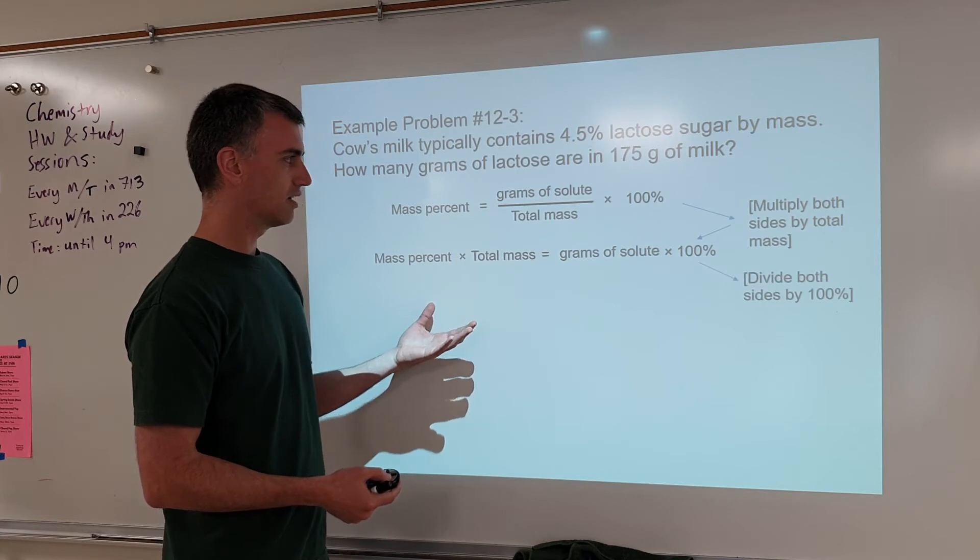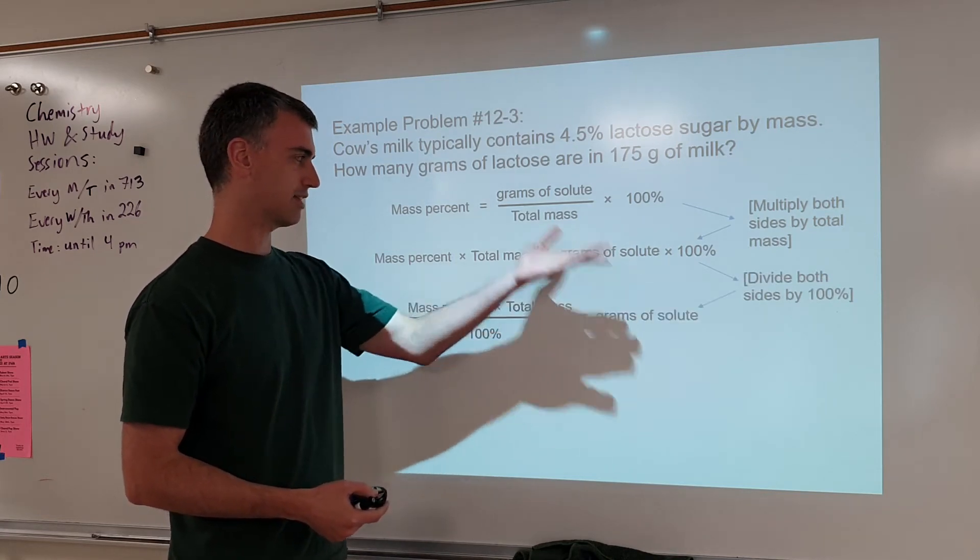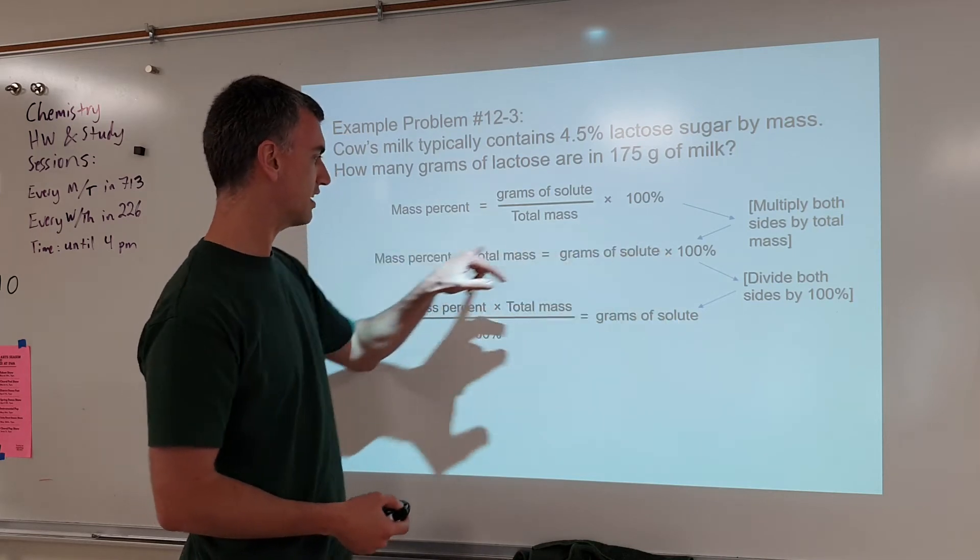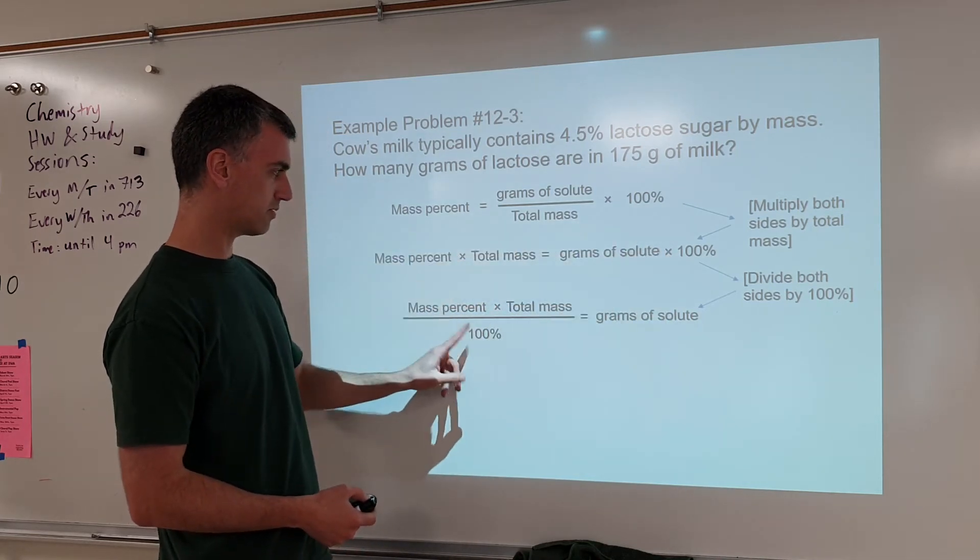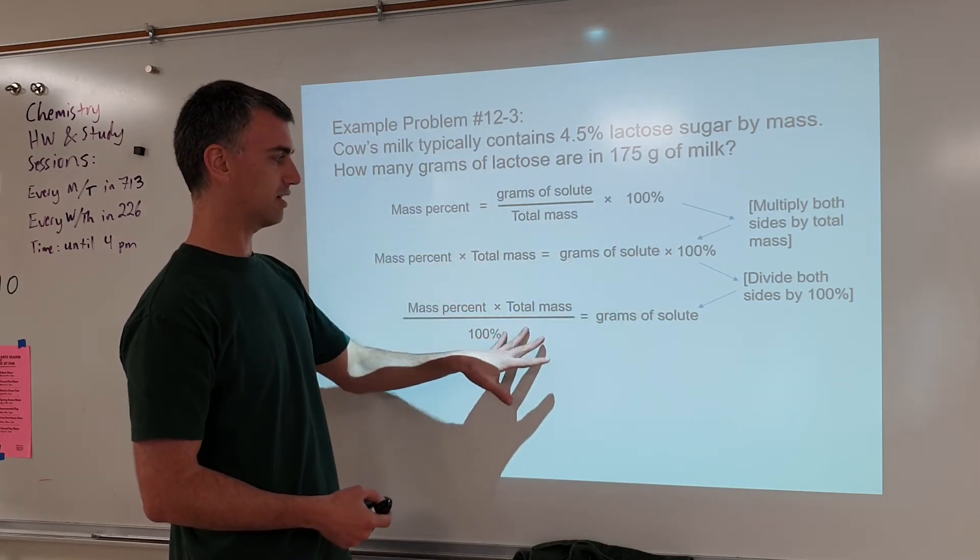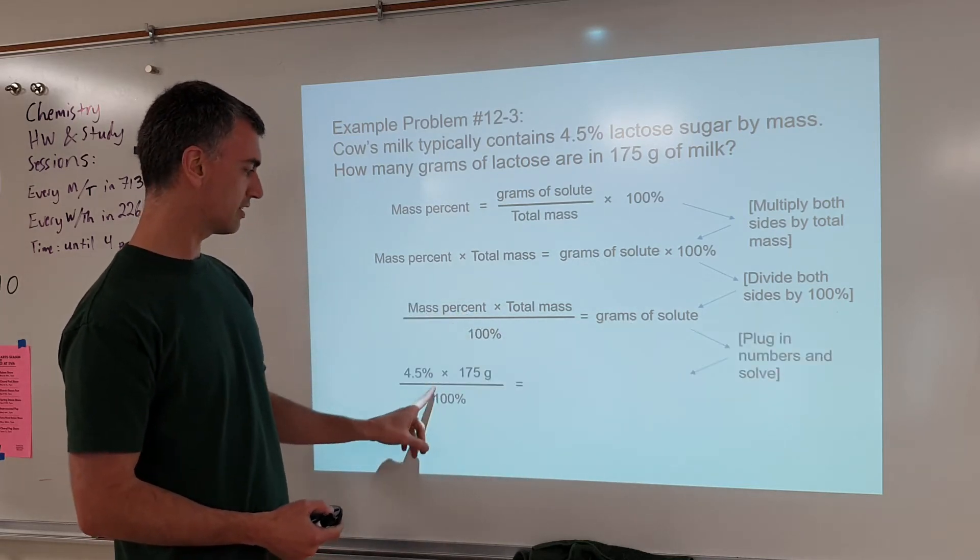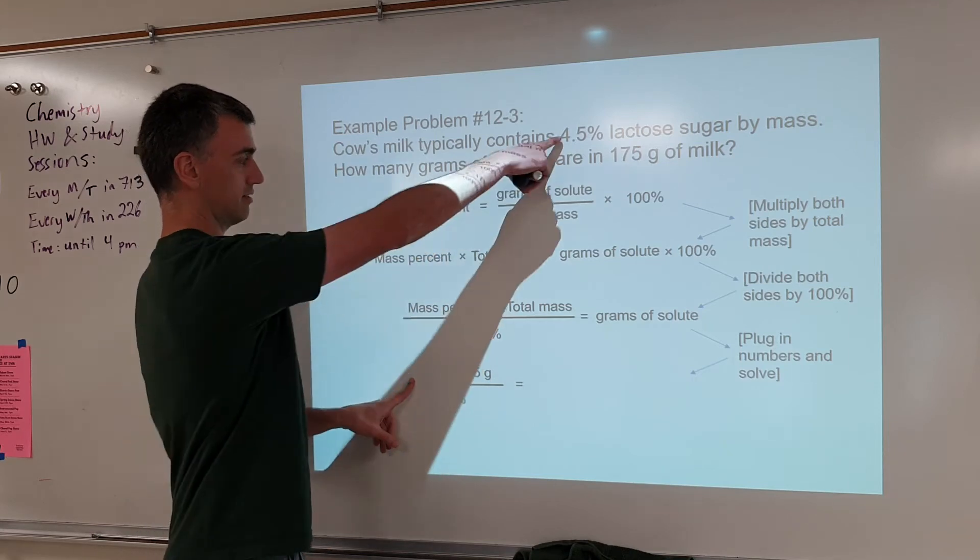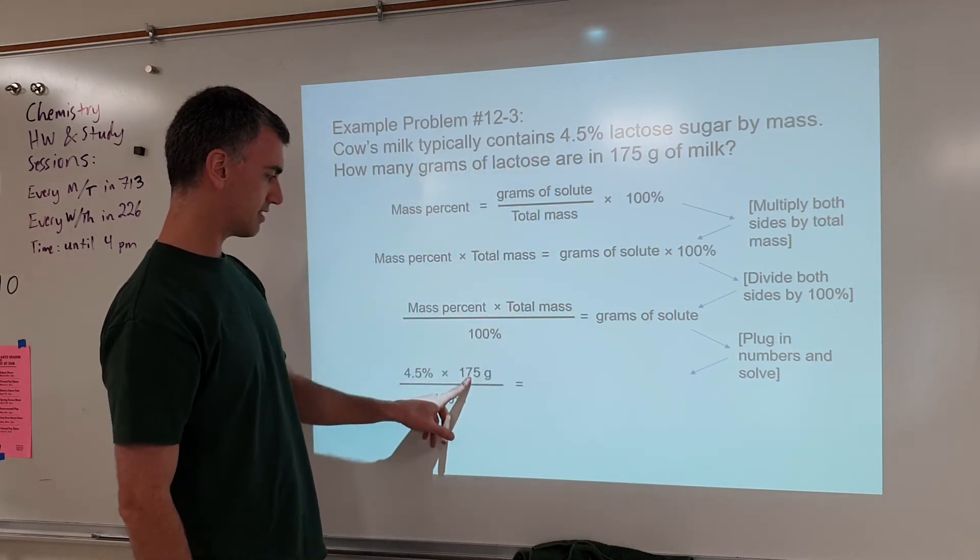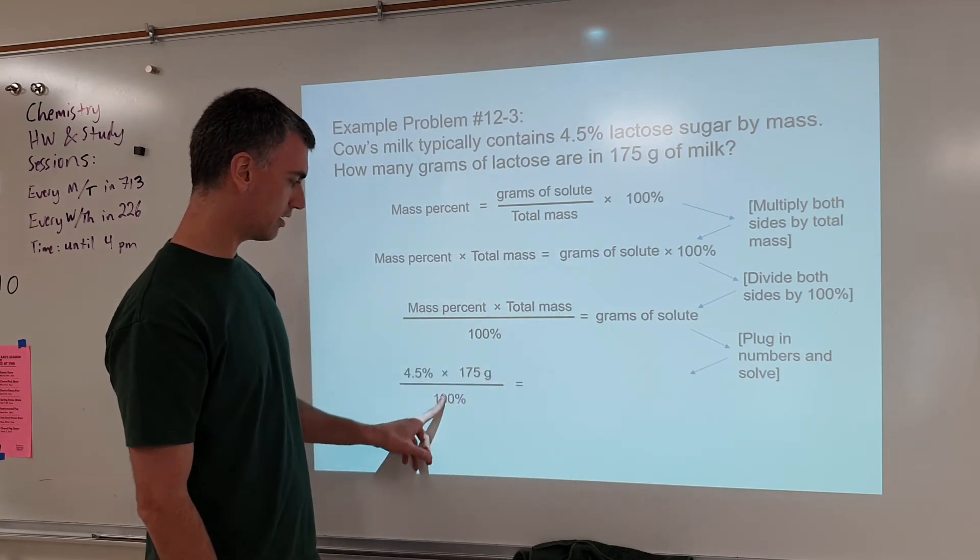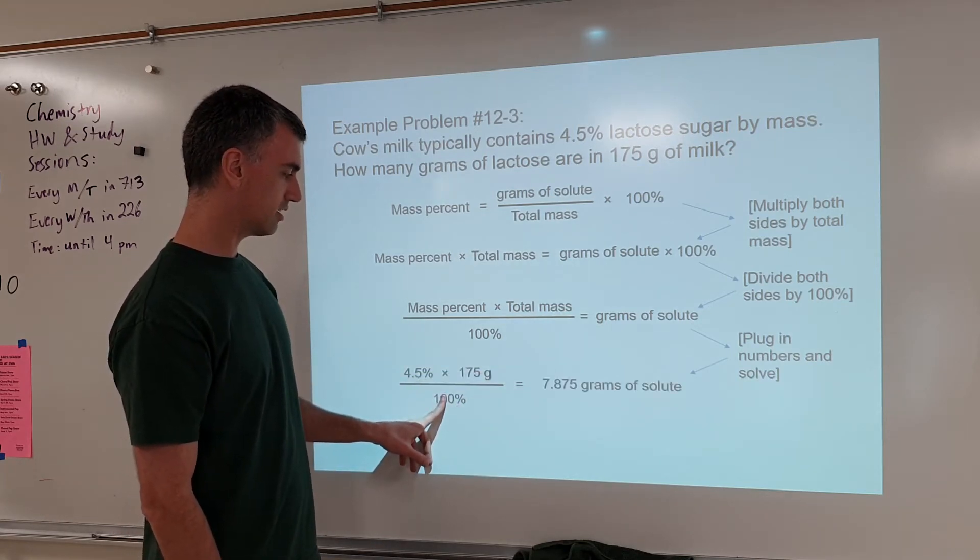Again, you've got to do it to both sides. Divide both sides by 100%, divide this by 100%, and divide this by 100%, that's where this comes from. So having done that, you now have this quantity by itself. Then it is as simple as plugging numbers and solving. So mass percent is that. Total mass is from right there, and there's your 100% which just moved over here. The calculator spits out that answer.